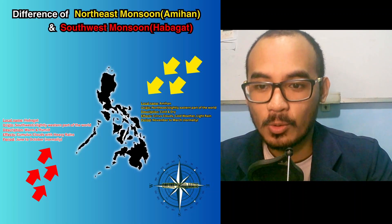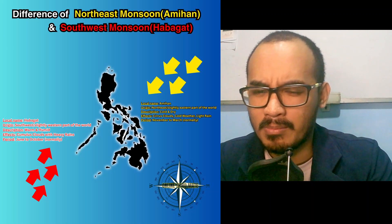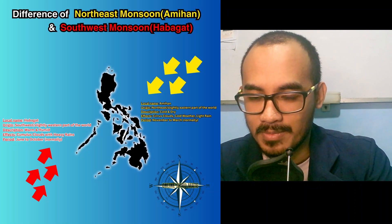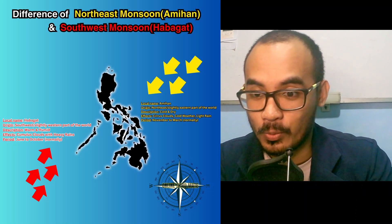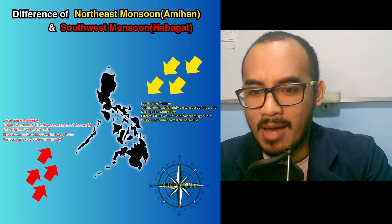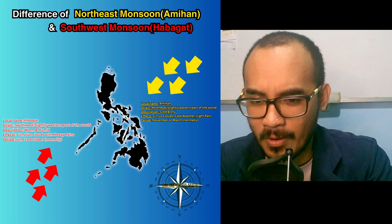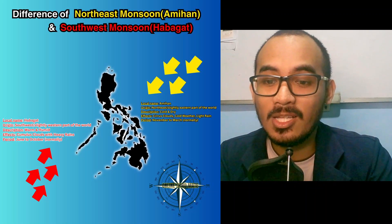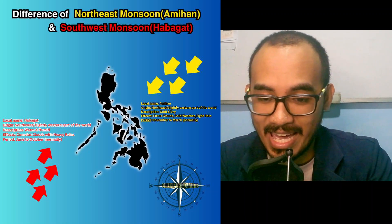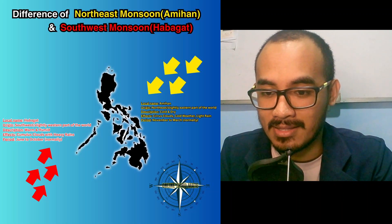Number one: Habagat, or the Southwest Monsoon. The season typically occurs from June to October. Wind direction is from the Southwest, slightly West. Characteristics: brings warm and humid air associated with heavy rainfall and thunderstorms, can lead to prolonged periods of rain, often causing floods and landslides. It also influences the wet season in the Philippines.